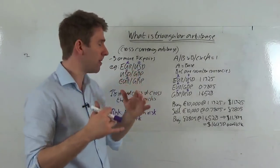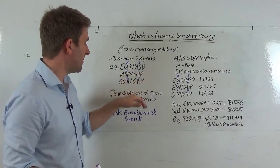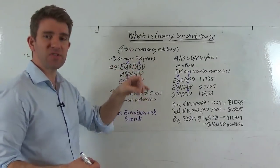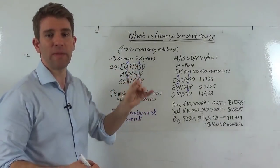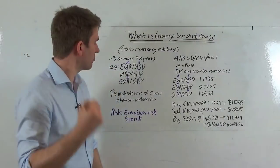All right, so when you need three or more FX pairs, let's focus on three for now. For example, we could have EUR/USD, USD/GBP, EUR/GBP. You can see how these are all linked together. You buy one, you sell the other, you sell one, you buy the other, you sell one, buy the other - you end up with a neutral position and hopefully if there's an arb opportunity there you end up with a little bit of profit.